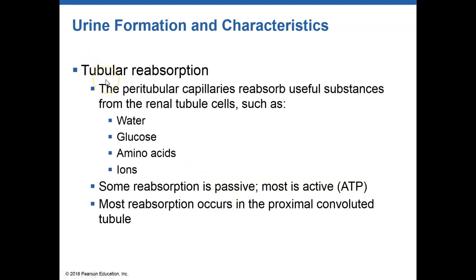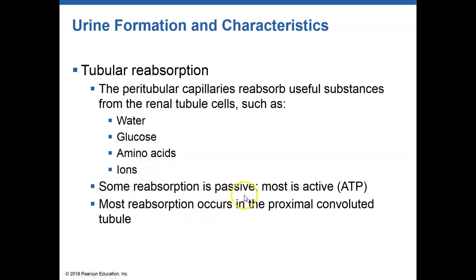The majority of reabsorption occurs in the proximal convoluted tubule. The reason for this is that the proximal convoluted tubule contains microvilli — just like the small intestines contain microvilli that increase surface area for absorption, the proximal convoluted tubules also contain microvilli that increase surface area for absorption. Most reabsorption is considered an active process, meaning we need energy to do so, though some reabsorption is passive.